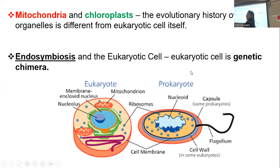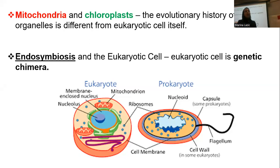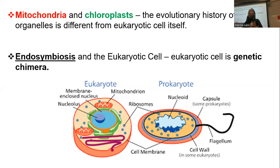Mitochondria and chloroplasts were basically bacteria. The evolutionary history of these organelles is different from eukaryotic cells itself. We say that the endosymbiotic theory is how we explain the development and progress of the eukaryotic cell. That's why we say that the eukaryotic cell is a chimera. There was one host that had a certain structure that ate mitochondria as energy-producing organelles, making the eukaryotic cell a genetic chimera.